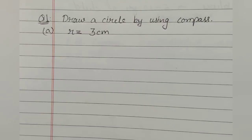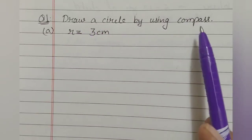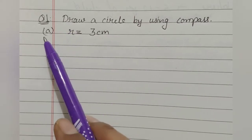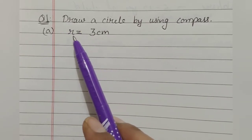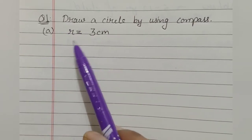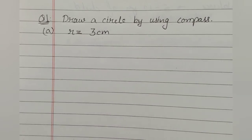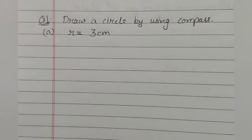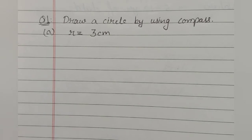Like here, our first question is to draw a circle by using compass. So, in first part, radius is given to us. R is equal to 3 cm. For this, first of all, we will draw a line segment of 3 cm.